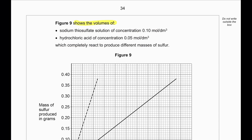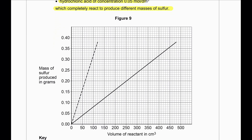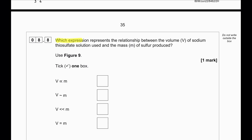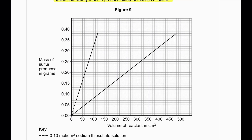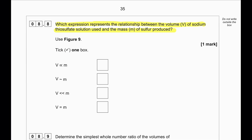Figure 9 shows the volumes of 0.1 mol/dm³ sodium thiosulfate solution and 0.05 mol/dm³ hydrochloric acid which completely react to produce different masses of sulfur. As the volume of reactant increases, the mass of sulfur produced also increases, so we can say that V is proportional to M.